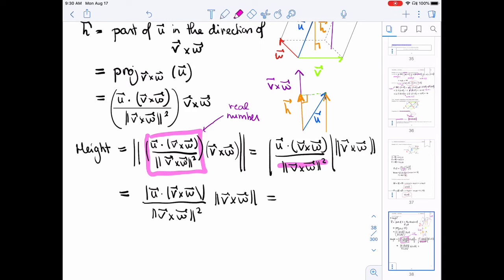We get this length squared and the length again. We can cancel one of the lengths with the two and we'll get u dot v cross w length of v cross w. All right. That's the height. That part here is the height.